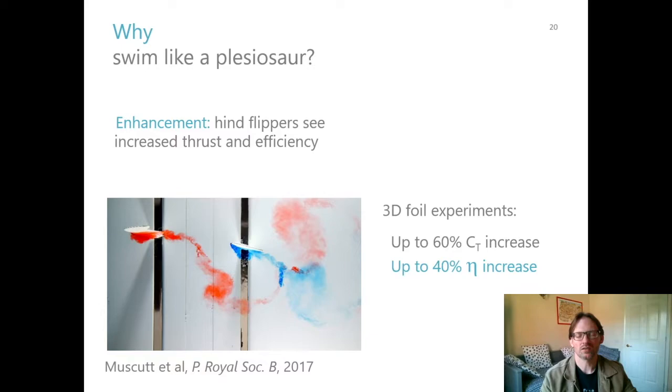Similarly, this back foil is using the front wake, using the wake of the front foil. And together, they can produce way more than either one could in isolation. So this is a set of experiments that were done here at Southampton, where we've got these kind of foil shapes, which were based off of actual plesiosaur skeletons that were found, plesiosaur fossils that were found.